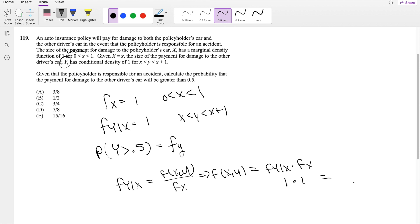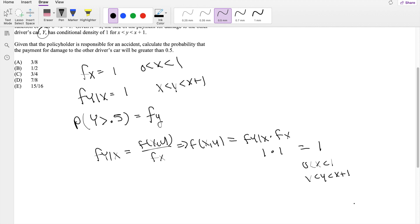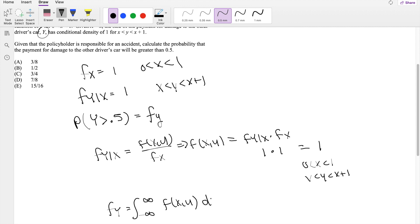If f of y given x is 1, and f of x here is going to be 1, so then this joint distribution is just going to be 1 for x between 0 and 1 and y between x and x plus 1. So now we have to find the marginal distribution of y, which we know by definition is negative infinity to infinity of the joint distribution f of x, y dx.